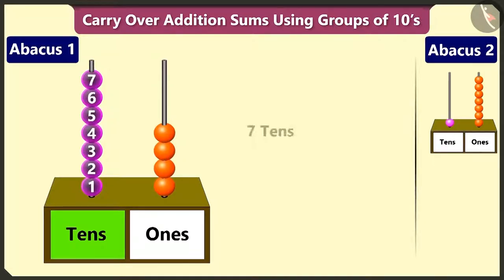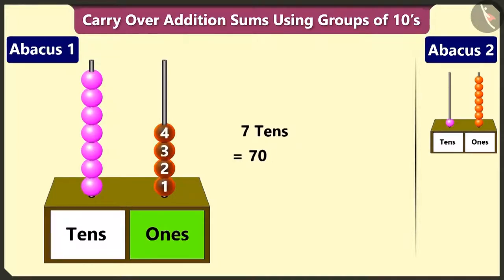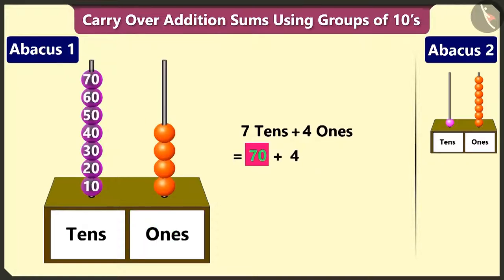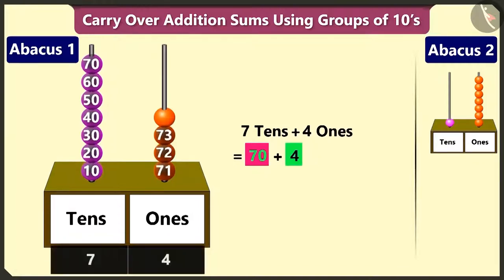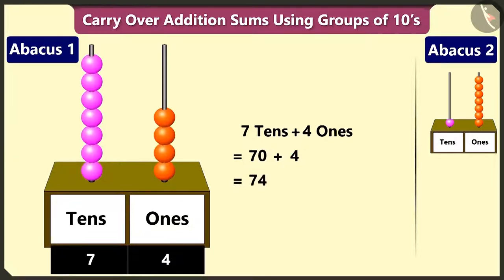In the first abacus, in the tens box, there are 7 beads. This makes it 7 tens, that is 70. And in ones box, there are 4 beads, which makes it 4 ones, that is 4. Now, to add 4 to 70, count after 70. 70, 71, 72, 73 and 74. Well done.